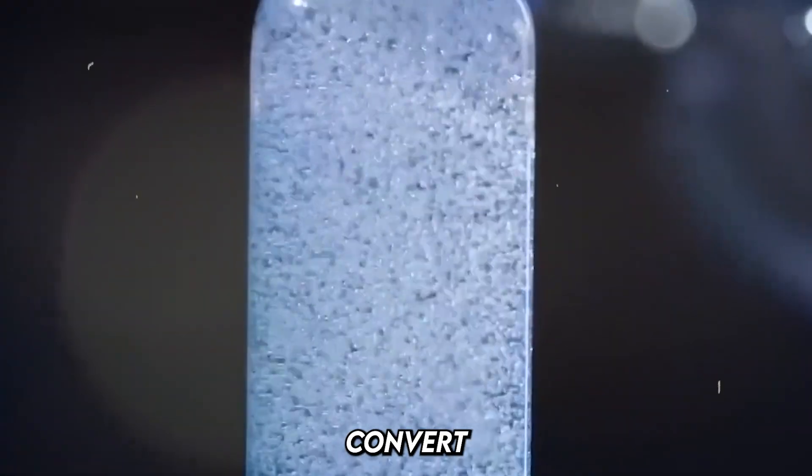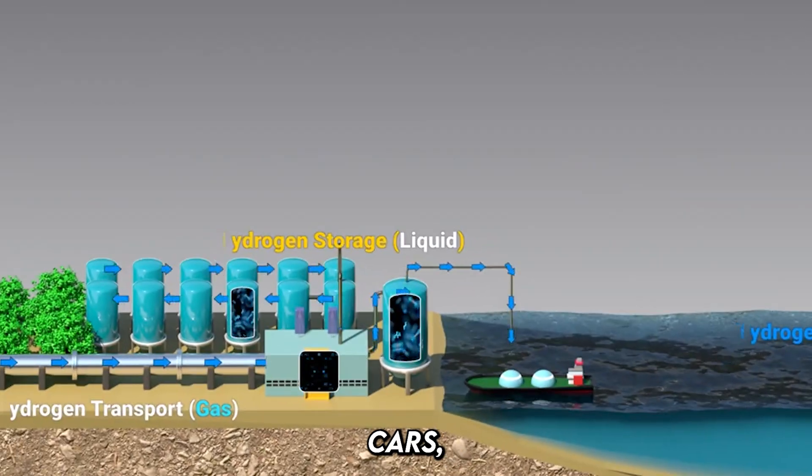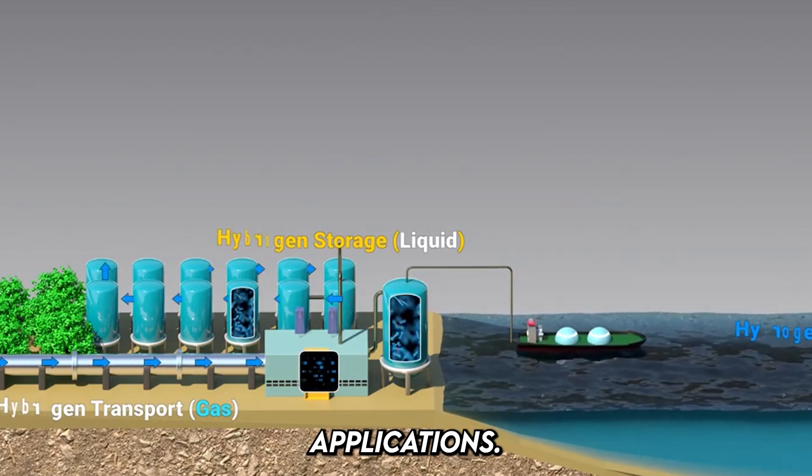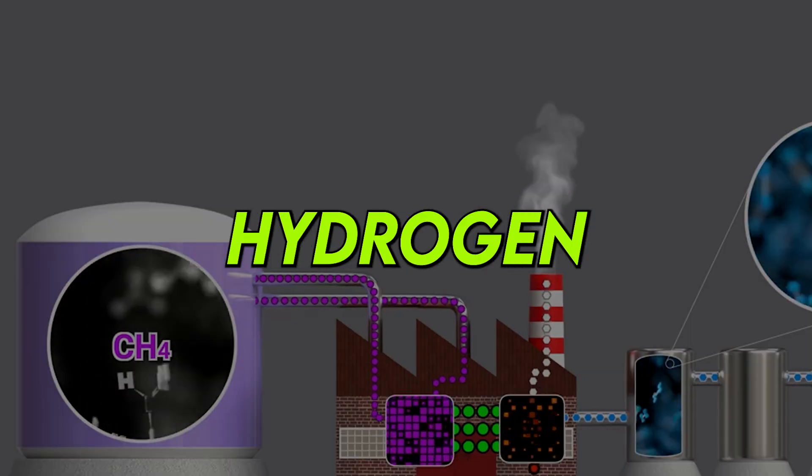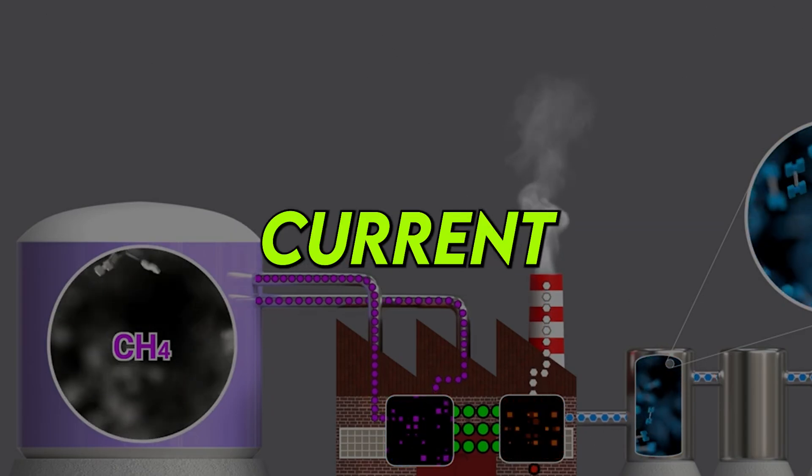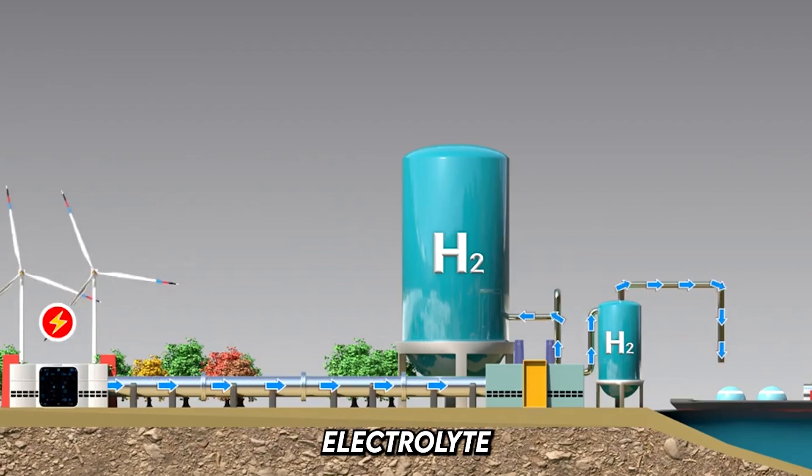Hydrogen fuel cells are devices that convert hydrogen into electricity. They are key to using hydrogen in cars, power plants, and other applications. Here's how they work: Fuel cells work by using the reaction between hydrogen and oxygen to produce an electric current. Fuel cell consists of an anode, cathode, and a membrane as electrolyte in the middle.